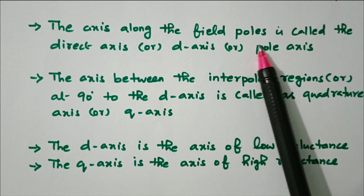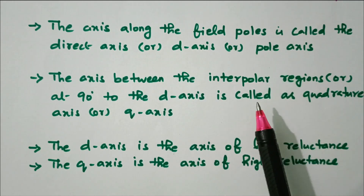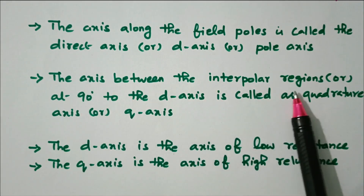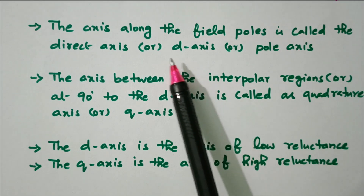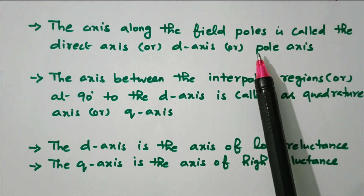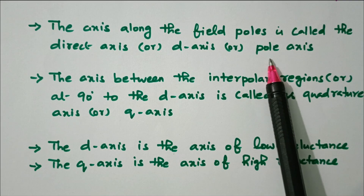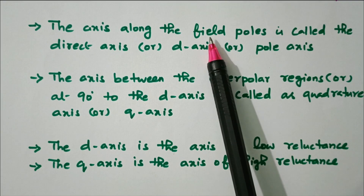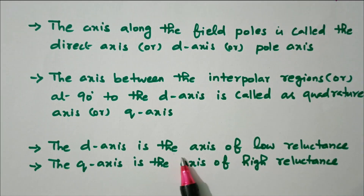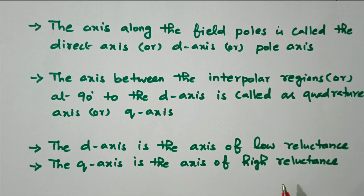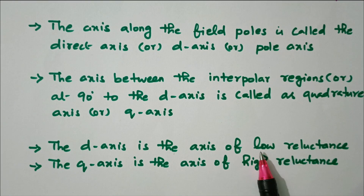The axis along the field pole is called the direct axis, D-axis or pole axis. The axis between the inter-pole regions, at 90 degrees to the D-axis, is called the quadrature axis or Q-axis. The D-axis is the axis of low reluctance, while the Q-axis is the axis of high reluctance. Because of this non-uniform reluctance, we use the two reaction theory, giving us low reluctance in the D-axis and high reluctance in the Q-axis.